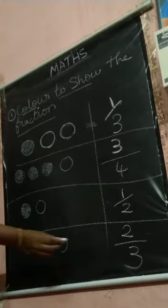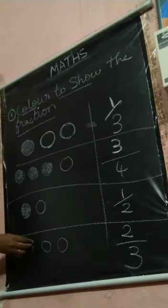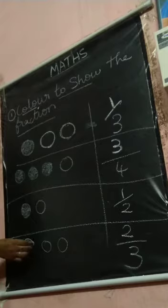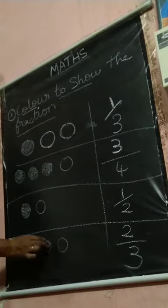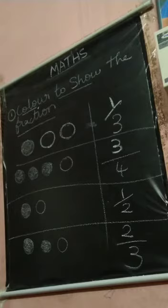Here 2 by 3 — how many balls are you going to color? 2 balls you are going to color. All of them understood? Color to show the fraction. The number on top is how many objects you are coloring.